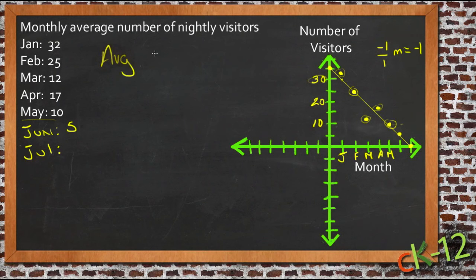So our average change, we call that delta, our average delta between each month is five visitors per month.